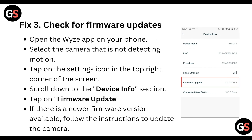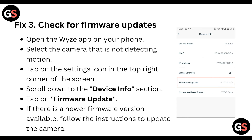Then check for a firmware update. Open the Wyze app on your phone, select the camera that is not detecting motion, tap on the settings icon in the top right corner of the screen, scroll down to the Device Information section, tap on Firmware Update. If there is a newer firmware version available, follow the instructions to update the camera.